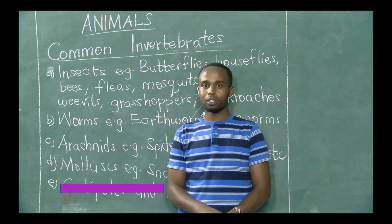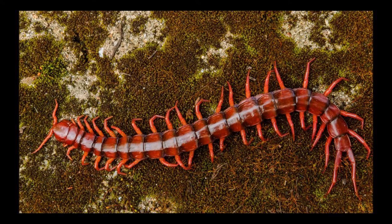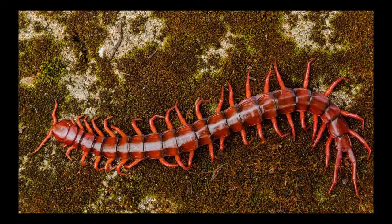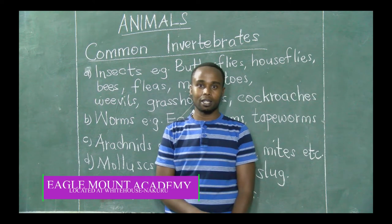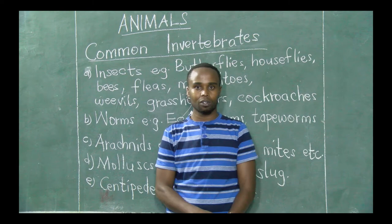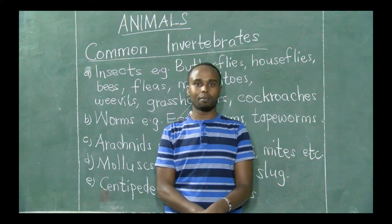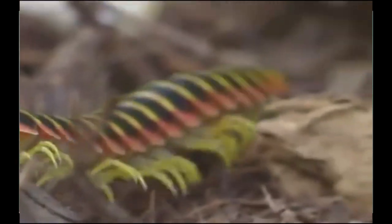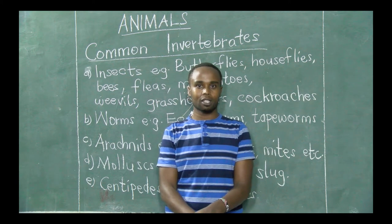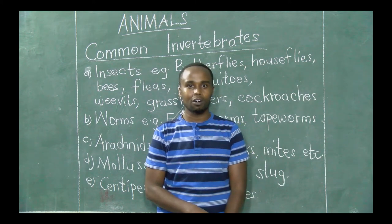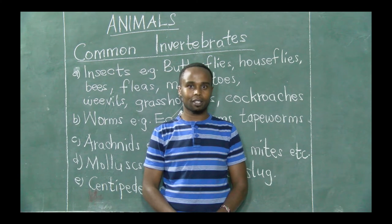The last group of invertebrates addressed today is centipedes and millipedes. One key difference between them is that a millipede has more legs than a centipede. Another difference is that a centipede is a carnivore and a millipede is a herbivore — meaning centipedes feed on small animals while millipedes feed on plants. Both are invertebrates. And that is the end of our class. Until next time, I wish you all the best. Goodbye.